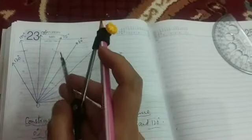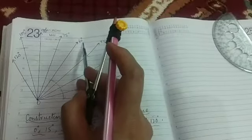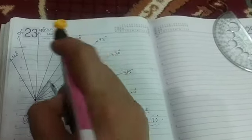Then comes the 75. See, 90 plus 60 is 150. That means 90 wale se aur 60 wale se ban jayega 75 ka angle.